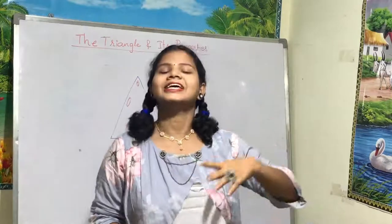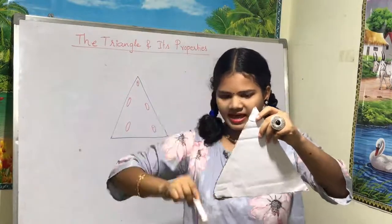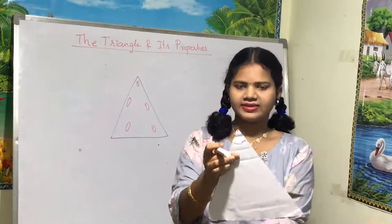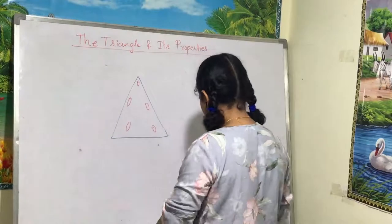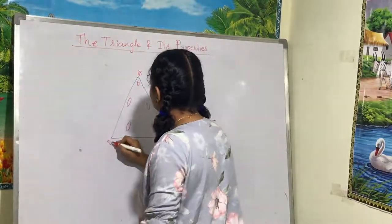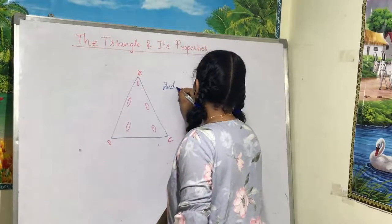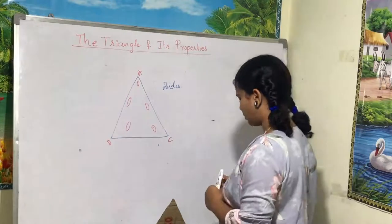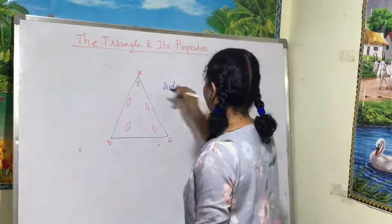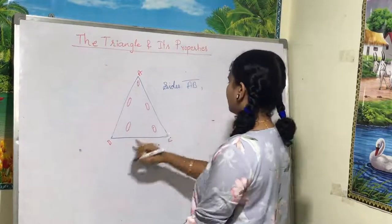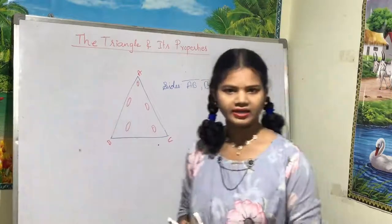Let's start counting. We can name this triangle ABC. Starting with the triangle, this triangle has sides: AB is a side, BC is a side, and AC is also a side. It has three sides.